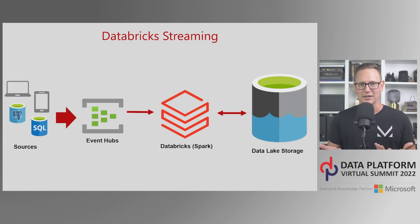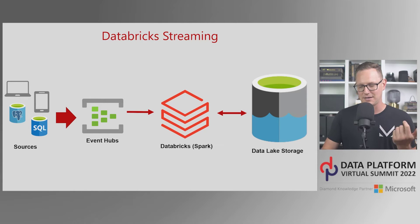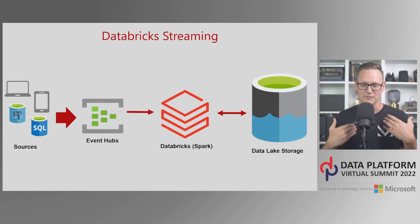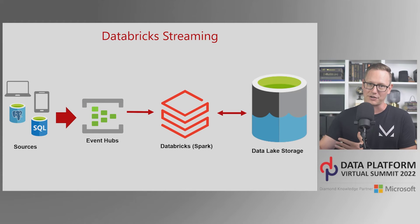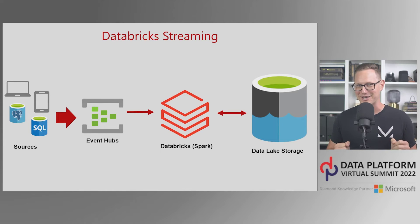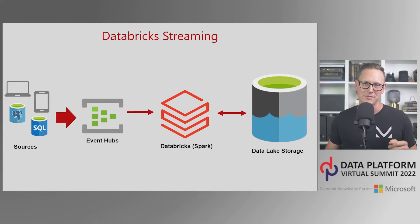Here's what our streaming pipeline would probably look like: data comes from somewhere into Event Hubs, then a job on Databricks running every five seconds processes it and drops data into Data Lake Storage. As a data engineer, I don't always know exactly where the data comes from that makes it into Event Hubs — I just know that a team in the organization is publishing events for me to consume. Either they document what the payload looks like, there's a schema registry, or I figure it out myself.